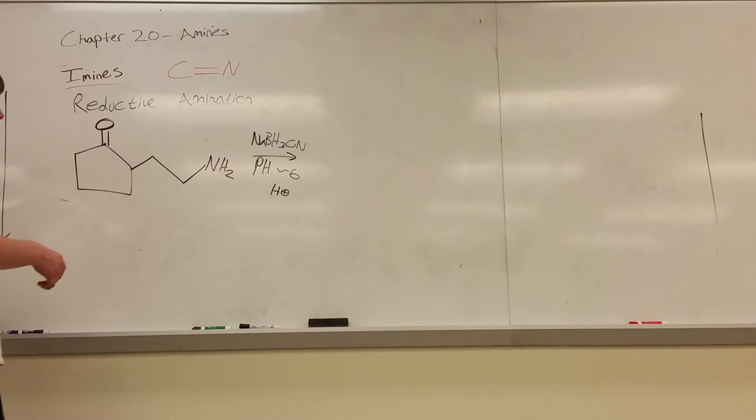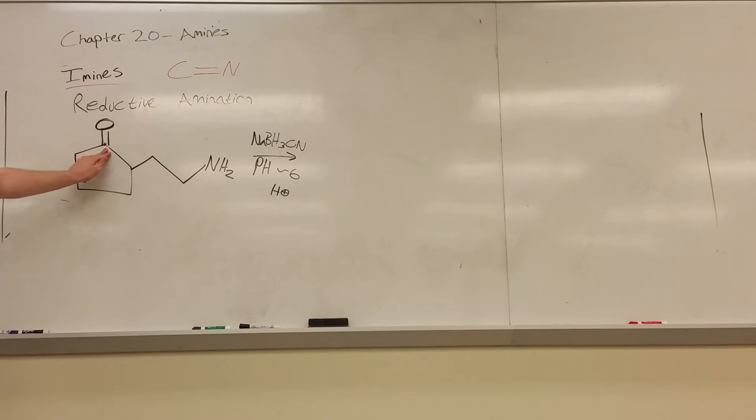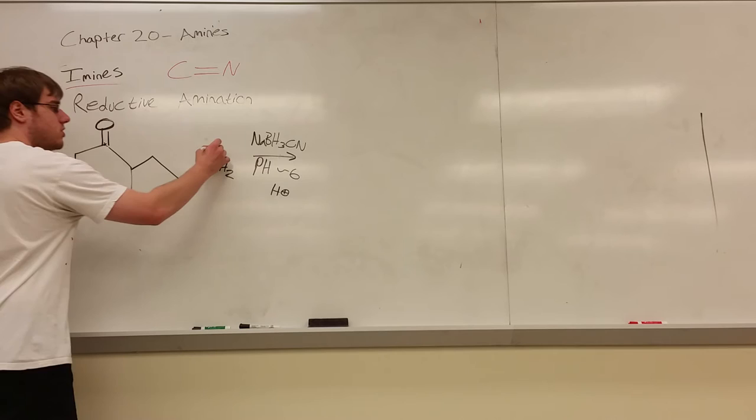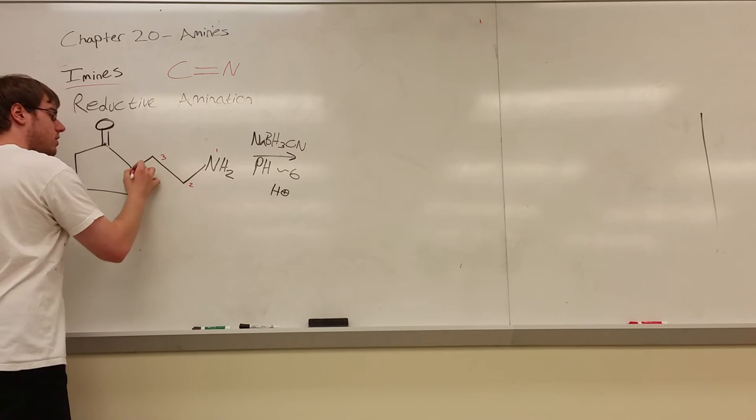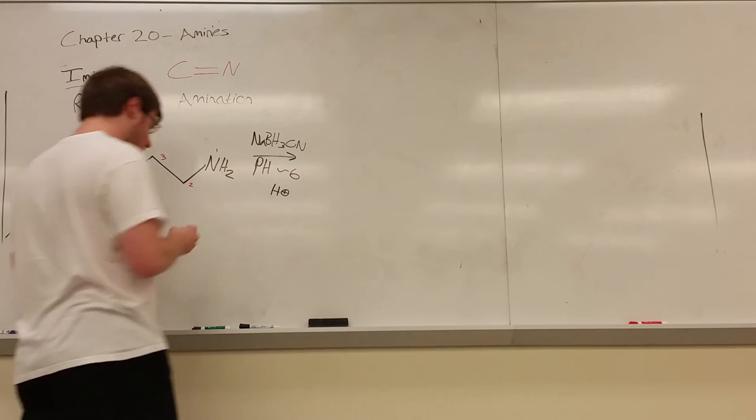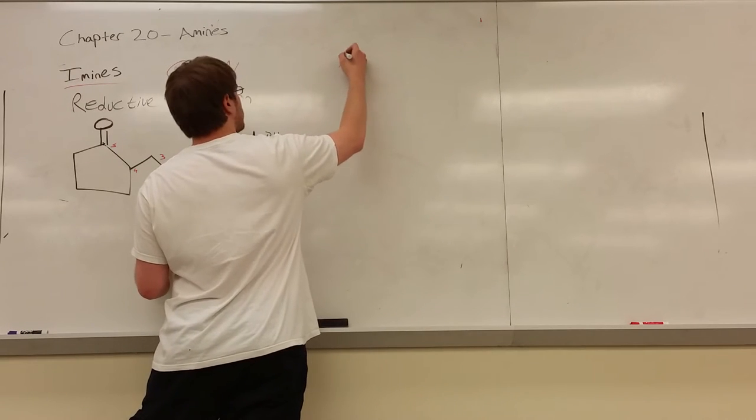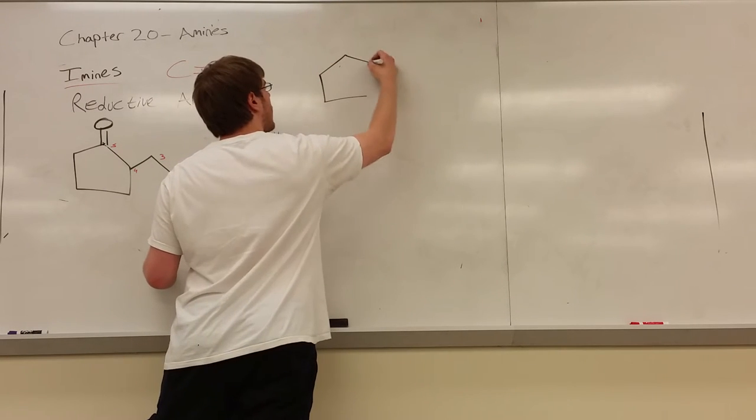Now, there's a fast way of doing this, and then we'll do the mechanism way of doing this. The fast way is to say, well, we know that the nitrogen likes to attack the carbon of the carbonyl. So I'm going to number that nitrogen 1, 2, 3, 4, 5. Based on that numbering, if this nitrogen is attacking here, I must be making a five-membered ring.